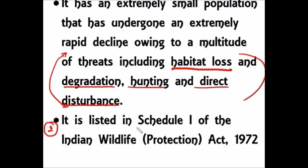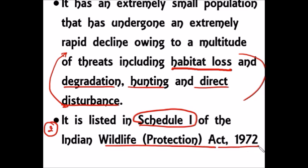The second important prelims point is that the Great Indian Bustard is listed in Schedule 1 of the Indian Wildlife Protection Act 1972. Remember this point because, being a critically endangered species, it needs complete protection, and so it is placed under Schedule 1 of the Wildlife Protection Act of India 1972.